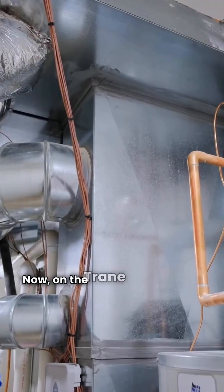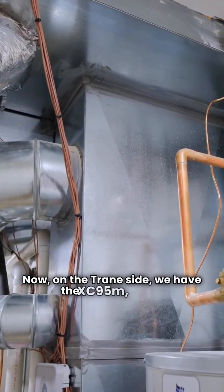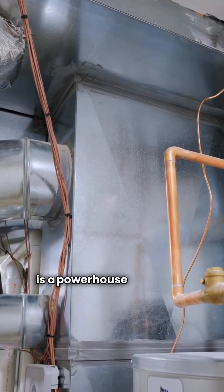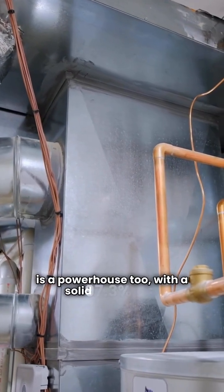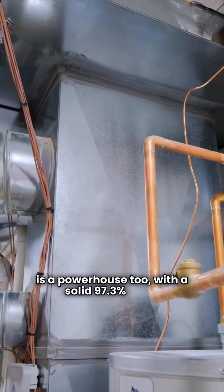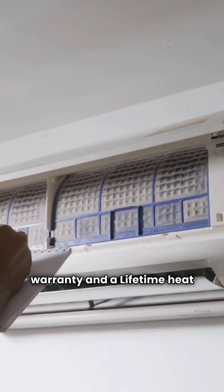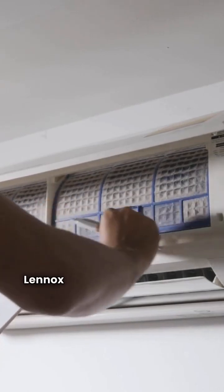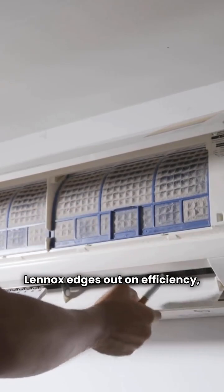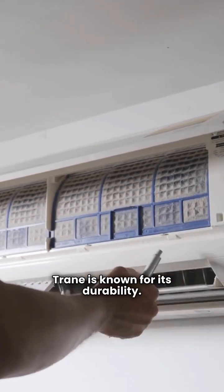Now, on the Trane side, we have the XC95M, which is a powerhouse too, with a solid 97.3% AFUE. Both come with a 10-year parts warranty and a lifetime heat exchanger warranty. Lennox edges out on efficiency, but Trane is known for its durability.